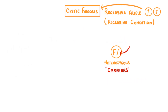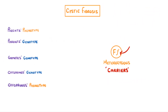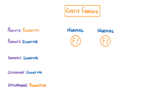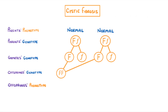So if we do a genetic diagram and cross two of these carriers, then the parent phenotypes would both be normal. The genotypes would be heterozygous, and for the gametes each parent would give one of each type — one dominant allele and one recessive allele. By drawing the crosses we can see that we get one homozygous dominant offspring, two heterozygous, and one homozygous recessive offspring.